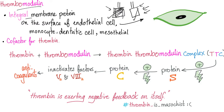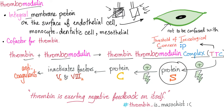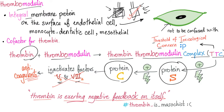Thrombomodulin is an integral membrane protein on the surface of the endothelial cell. Thrombin plus thrombomodulin forms the thrombin-thrombomodulin complex, or TTC. TTC will activate protein S, which in turn will activate protein C, which will inactivate the active factors 5 and 8. Factors 5 and 8 are pro-coagulation. When you inactivate pro-coagulation factors, you get anticoagulation. In a sense, thrombin is exerting negative feedback on itself.